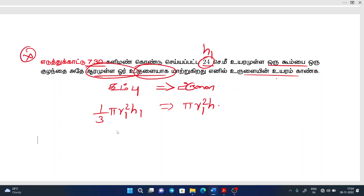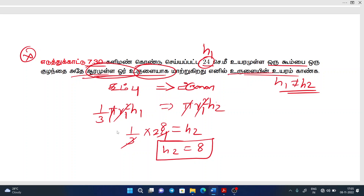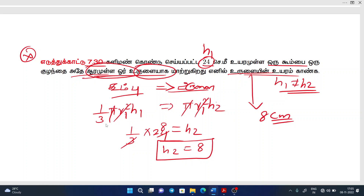Now, if you have two values and you have a cone, you will use the cone formula. The h1 value is 24, which is equal to h2. The h2 value is 8 centimeters — that is the answer. The formula is the same; the value is the same, but the h1 value is different.